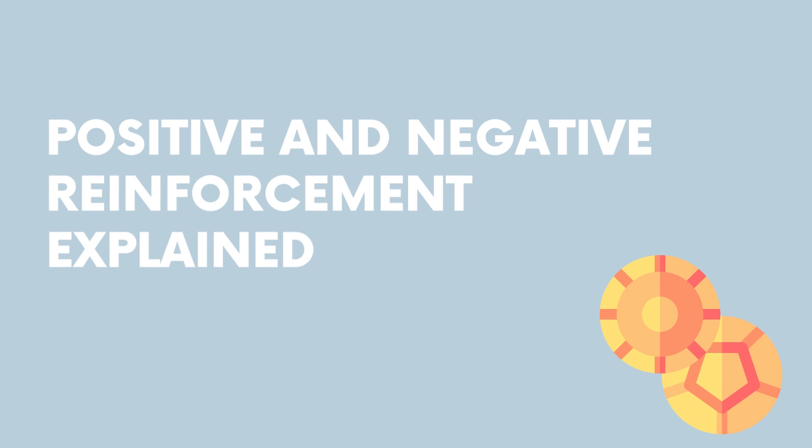Operant conditioning, sometimes referred to as instrumental conditioning, is a method of learning that employs rewards and punishments for behavior. Through operant conditioning, an association is made between a behavior and a consequence, whether positive or negative, for that behavior. Reinforcement and punishment are the two major categories of consequences in operant conditioning.